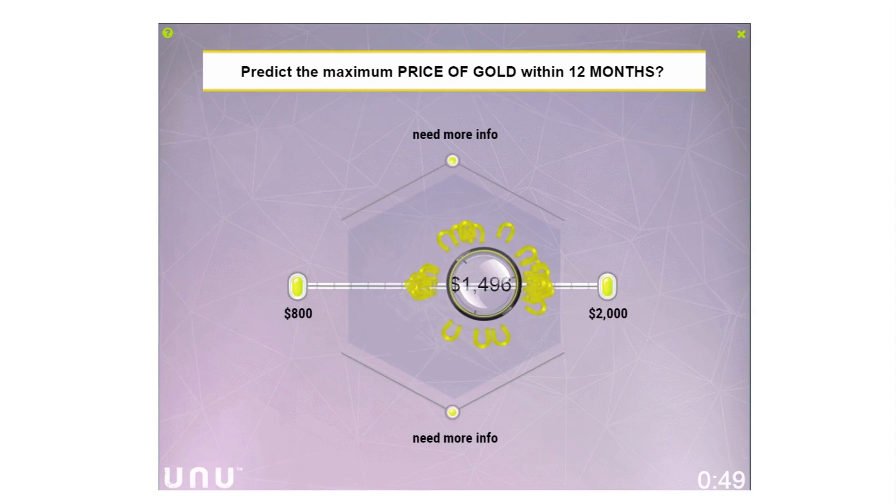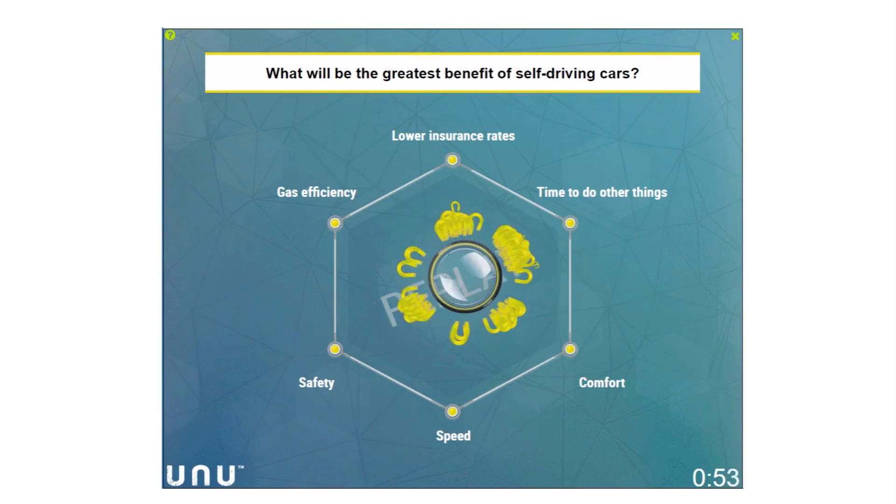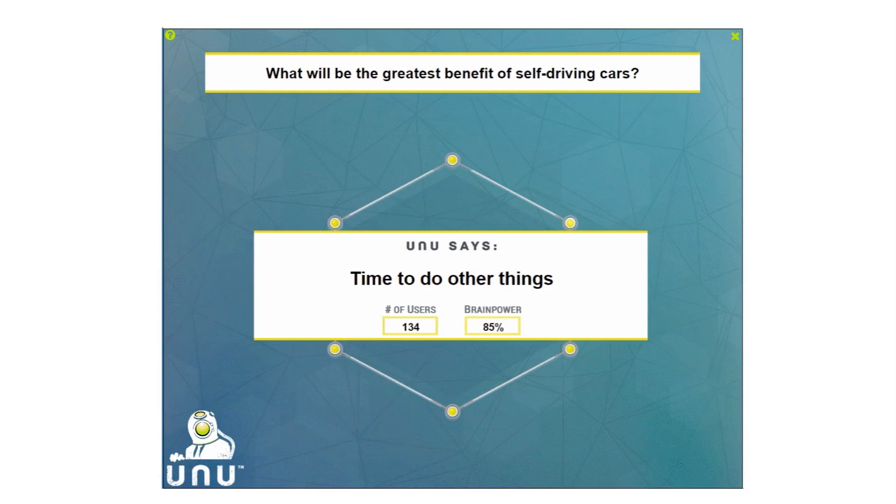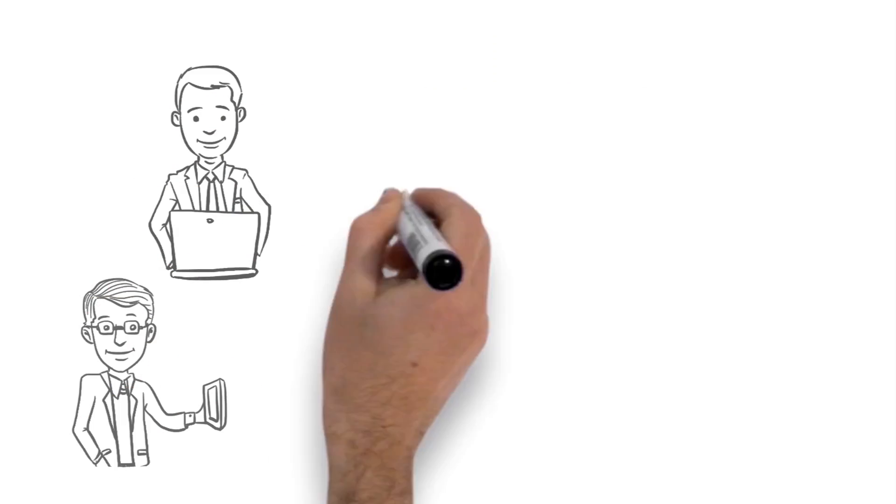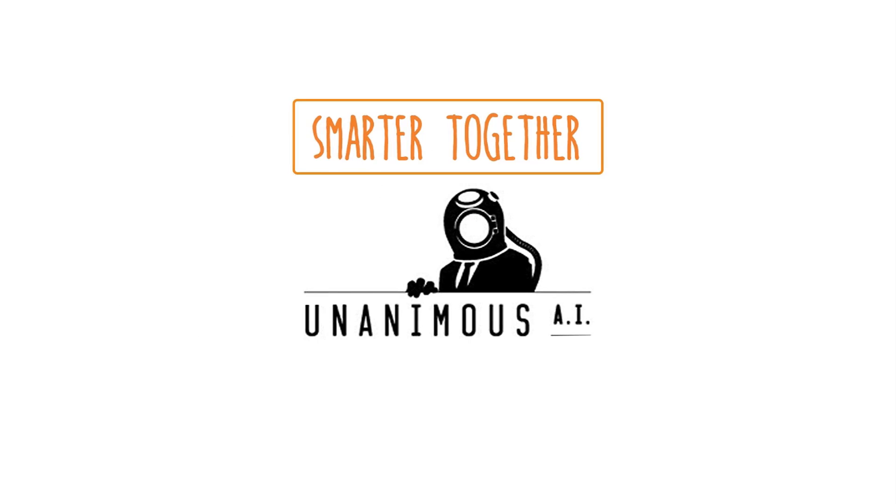our swarm AI technology taps the knowledge, wisdom, insights, and intuitions of large online groups and amplifies their collective intelligence, empowering them to be smarter together. At unanimous.ai